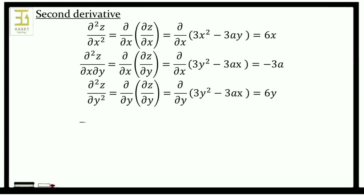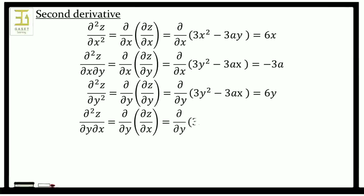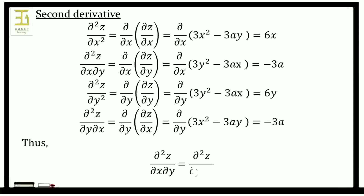And dou squared z by dou y dou x is equal to dou by dou y of dou z by dou x. Substituting the value of dou z by dou x, we get minus 3a. From here we observe that dou squared z by dou y dou x is equal to dou squared z by dou x dou y — that is, mixed partial derivatives are equal. We will discuss more examples in another session.